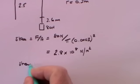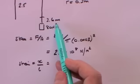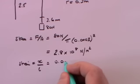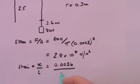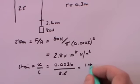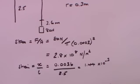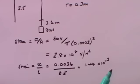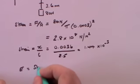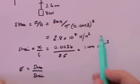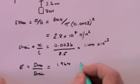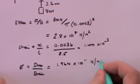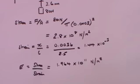The strain is extension over original length: 3.6 millimetres, which is 0.0036 metres, divided by the original length of 2.5 metres, giving 1.44 times 10 to the minus 3 — dimensionless, of course. Young's modulus E is stress over strain: dividing 2.8 times 10 to the 8 by 1.44 times 10 to the minus 3 gives 1.964 times 10 to the 11 newtons per metre squared, which is nearly 2 times 10 to the 11 N/m².